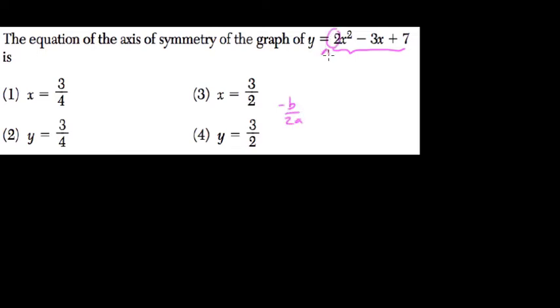And here, this is our a term. This is our b term. b is equal to negative 3. So we have negative 3 over 2 times 2, which is negative 3 fourths.